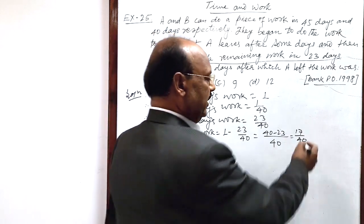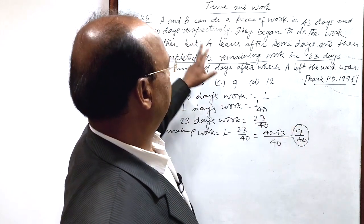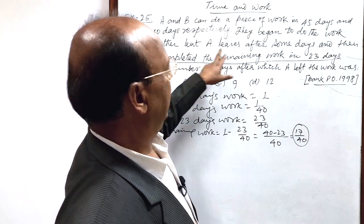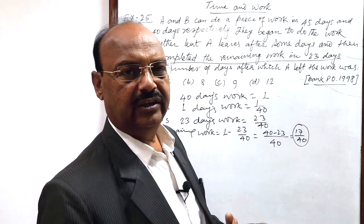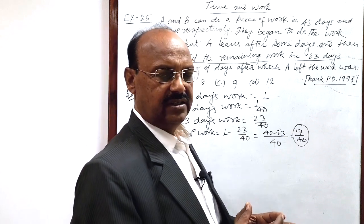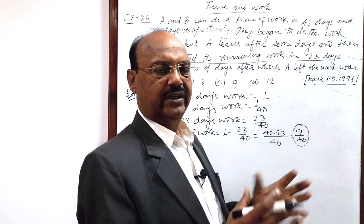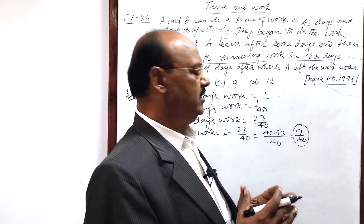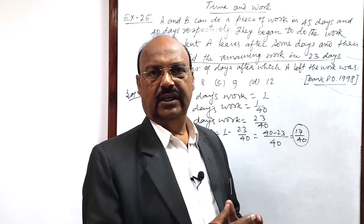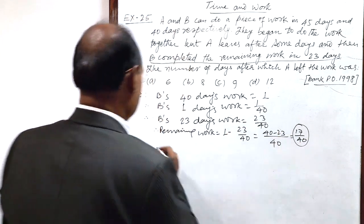This is the remaining work. And this remaining work, 17 by 40, has been completed when A and B are working together. So we will see that in how many days this much work has been completed by A and B working together.